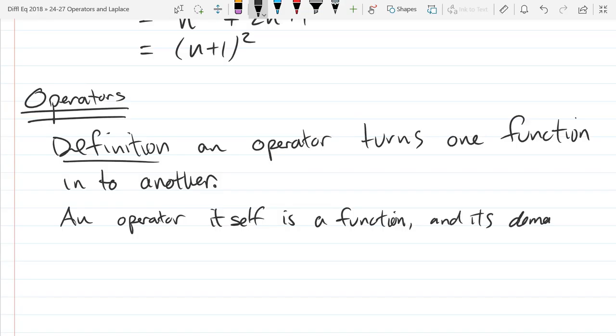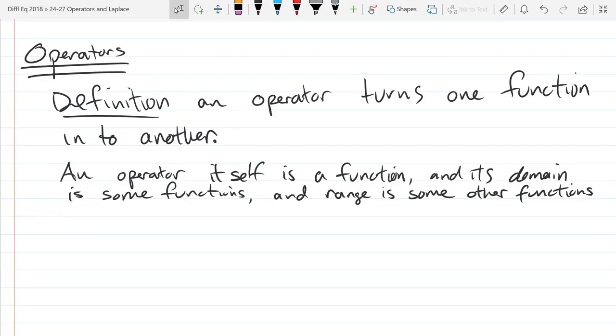An operator itself is a function. Its domain is some functions, and range is some other functions. Generally, our operators are going to have their domains being differentiable functions. But in general, you can have more abstract operators that can have functions that have sharp turns. For example, you can anti-differentiate absolute value pretty easily, even though you can't take a derivative.